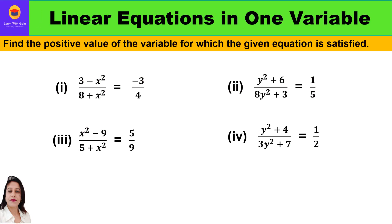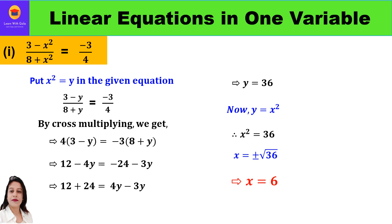The question is: find the positive value of the variable for which the given equation is satisfied. They are asking us to find only the positive value. Now if you see these four parts, the variable is raised to power 2 — that means x², y², x², y² — so these are quadratic equations. To solve them, we will first convert these quadratic equations into linear equations.